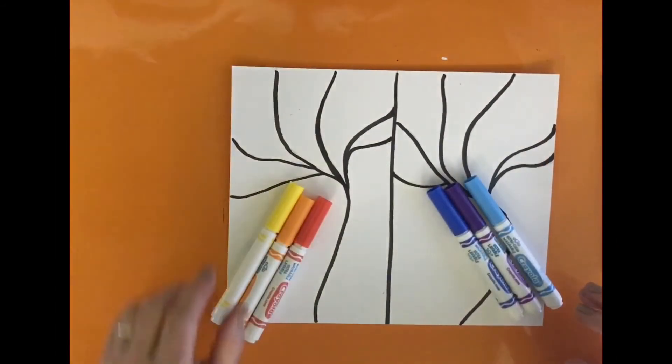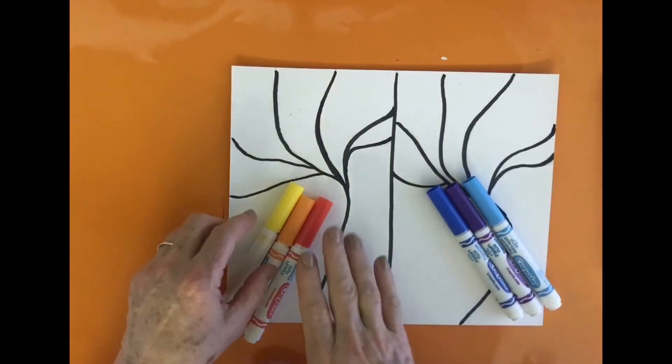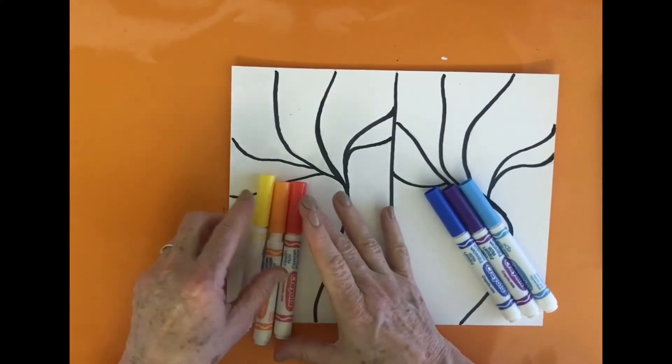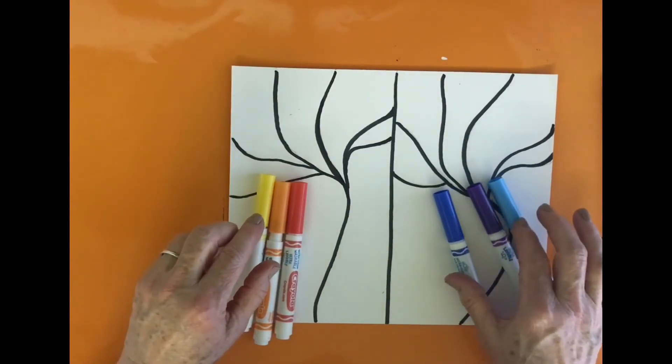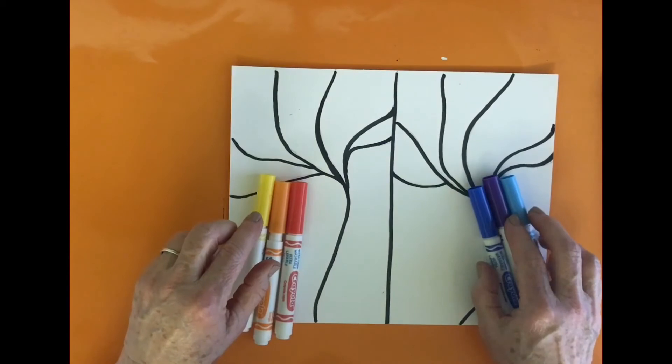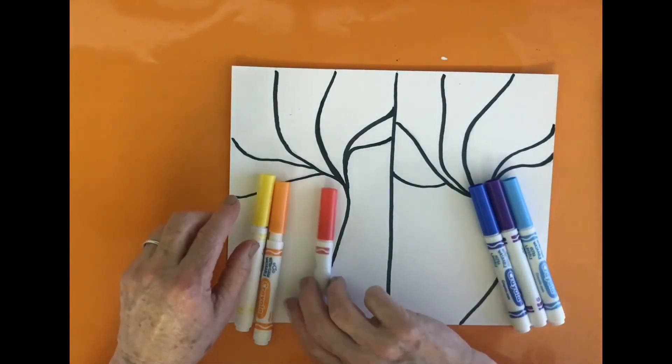I'm ready to begin coloring with markers. I have my warm colors here: red, orange, and yellow, and my cool colors here: blue and another kind of blue and violet or purple, and I'm going to start coloring.